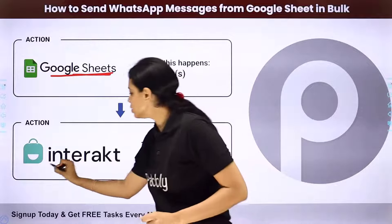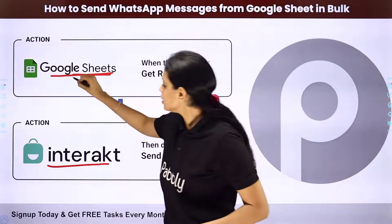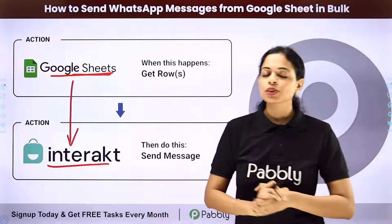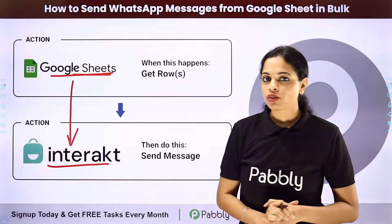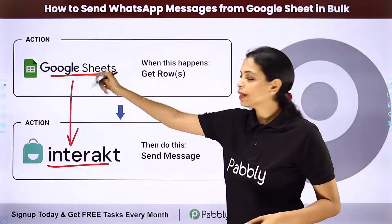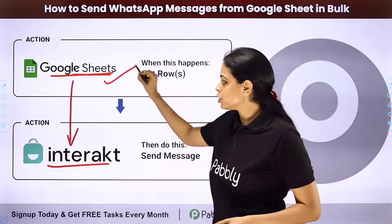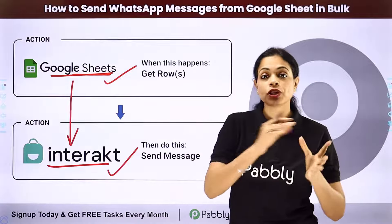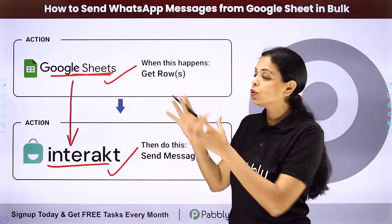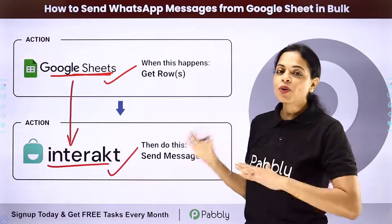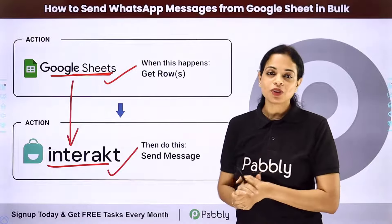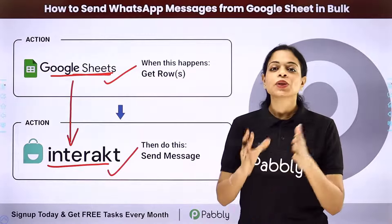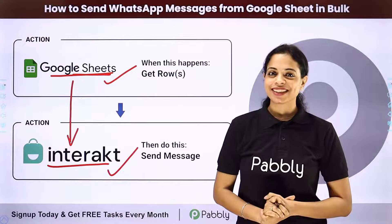Here we are using Interact. You have to integrate the two applications, and the same thing can be done using Pabbly Connect software. Your action applications would be Google Sheet and Interact, and your trigger application would be Schedule, where you are going to schedule this workflow. Now let me take you to my screen to show how you can integrate and automate this entire process yourself.